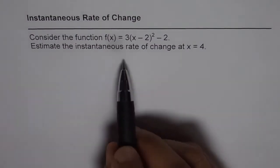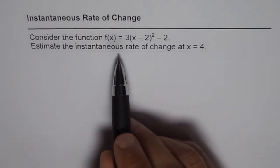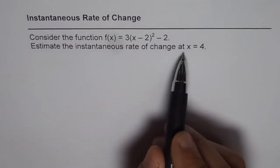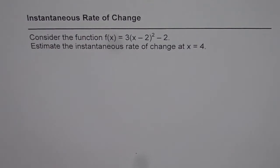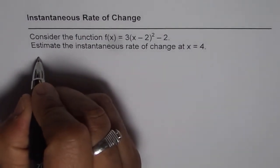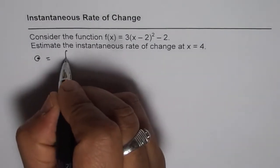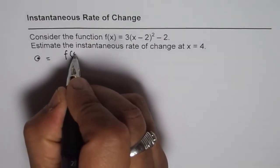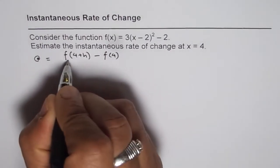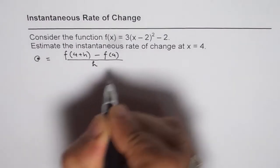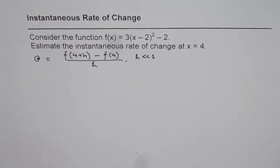I have taken purposely only this part of the question where we need to find instantaneous rate of change at a point, and this point is x = 4 for us. We will use the difference quotient method. So instantaneous rate of change at 4 should be [f(4 + h) - f(4)] / h, where h has to be very, very less as compared to 1.